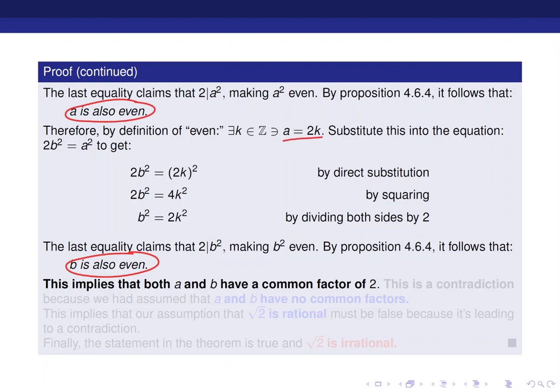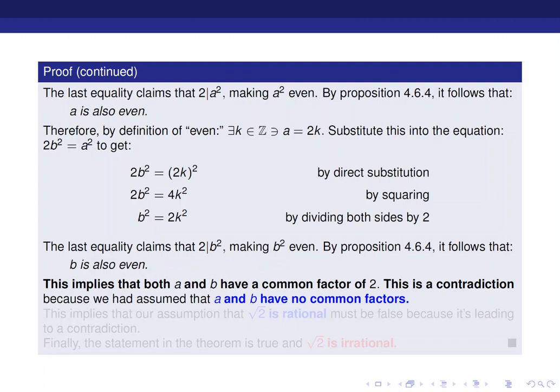And so a is basically 2k, and b is technically going to be some sort of 2t, for example. So they both have a 2 at least that is common. But this is a contradiction, because we had assumed that a and b have nothing in common. So how could they still have a 2?